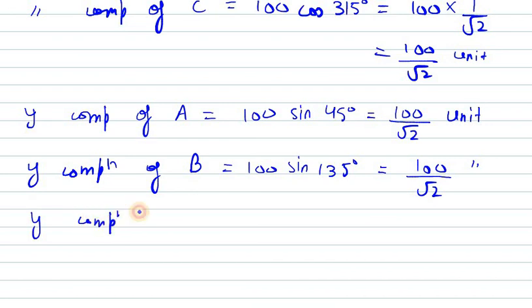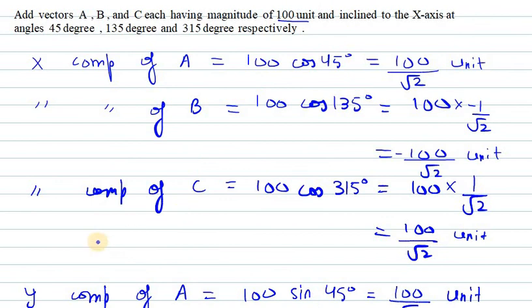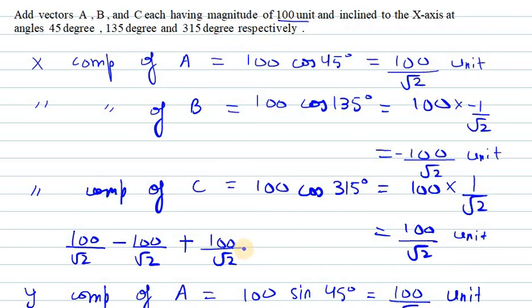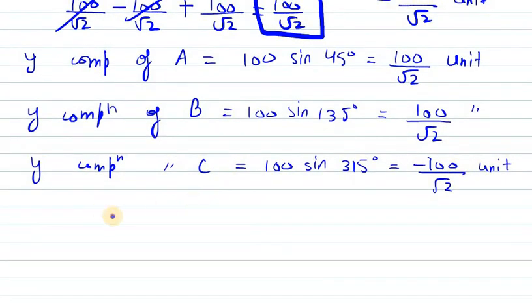The y-component of C equals 100 sin 315°. Sin 315° is −1/√2, so the y-component of C is −100/√2 units. Now the resultant x-component is 100/√2 − 100/√2 + 100/√2. The two 100/√2 terms cancel, leaving a resultant x-component of 100/√2 units.